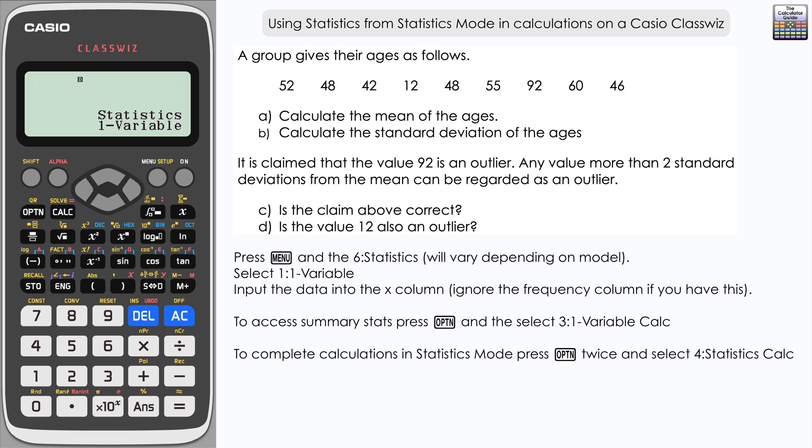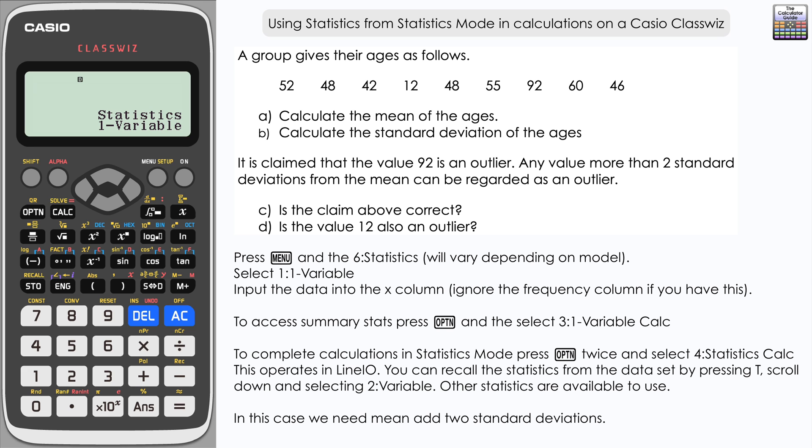Let's recall the mean. Press option, scroll down, and select option 2 variable, then 1 for X-bar, the mean.